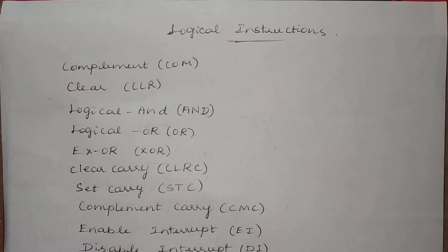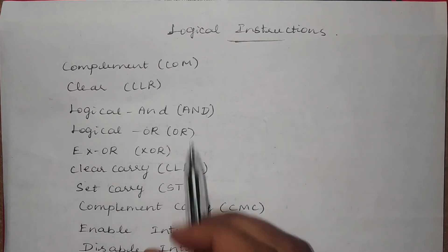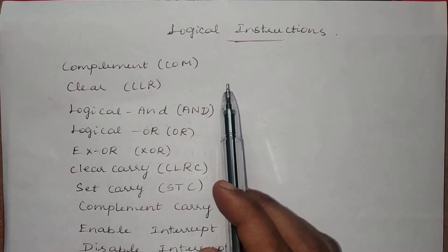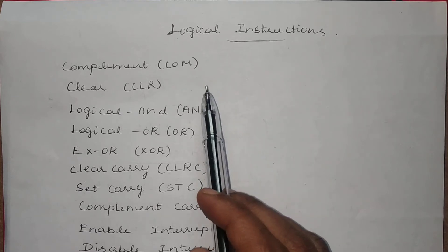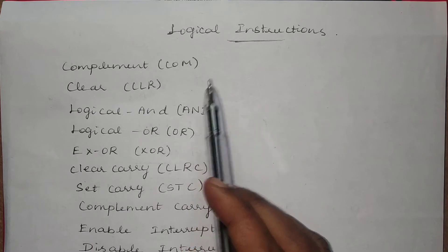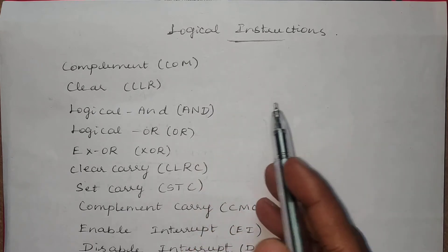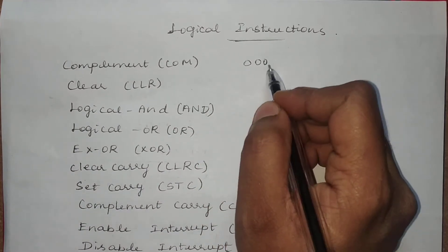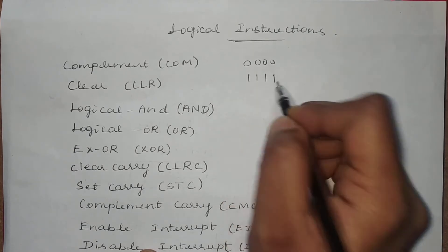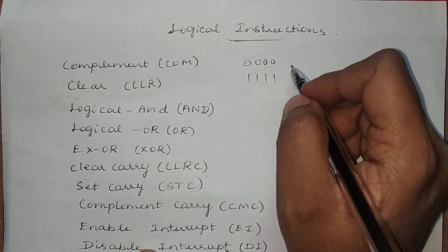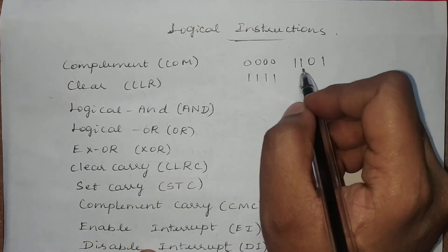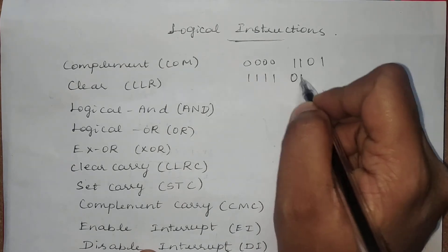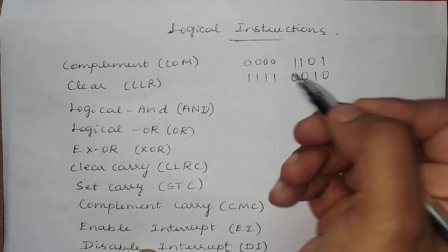The first one is the complement instruction. This instruction will complement the given data. Whichever data you are fetching, either from the register or from the memory, after performing the complement instruction the result will be the complemented information. For example, if the data is 1101, then after performing the complement operation the result is 0010. This is how complementation is done.